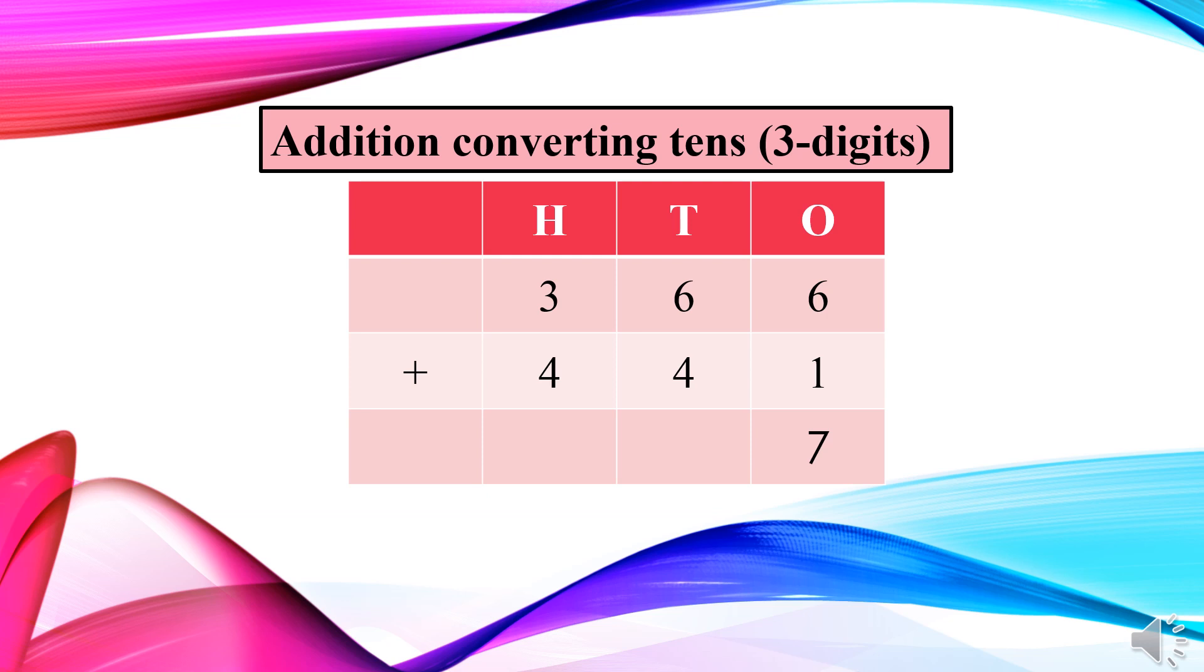Now we have to move to tens place. At tens place, we have six tens and four tens. So what do we have to do? We have to add six tens and four tens. You can also suppose it like this: that you have six candies and your baba gave you four more candies. So how many candies are there in all? Yes, ten. But ten is a two-digit number, right?